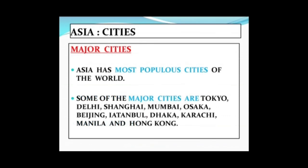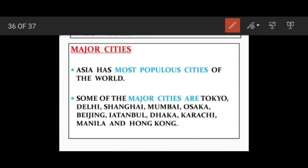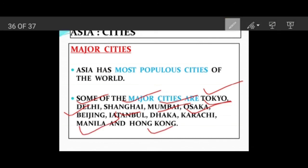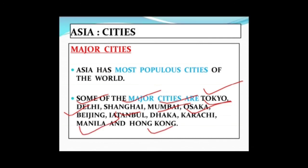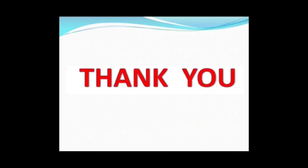The last topic of this chapter is major cities. Asia has some of the most populous cities in the world, including Tokyo, Delhi, Shanghai, Mumbai, Osaka, Beijing, Istanbul, Dhaka, Karachi, Manila and Hong Kong. There are many more cities listed in your textbook. Thank you, that's all for this chapter.